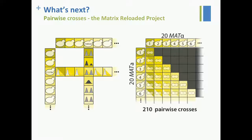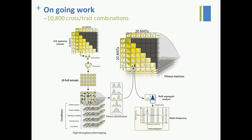In this part, we crossed sigma — one strain — by many, identified one interesting case, and then crossed that strain by many. The next step we've started is to cross many by many to obtain a bigger matrix. So far we have done 70 by 70, giving around 4,900 hybrids, from which we'll select 20 by 20. We're also going to increase the number of tetrads for more precise segregation data, increase the number of conditions, and aim for something like 10,800 cross-trait combinations to get a better view of the landscape of inheritance.